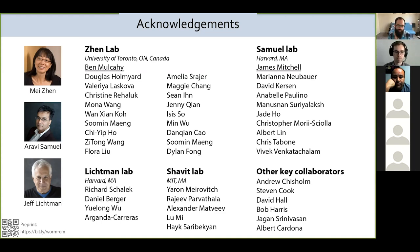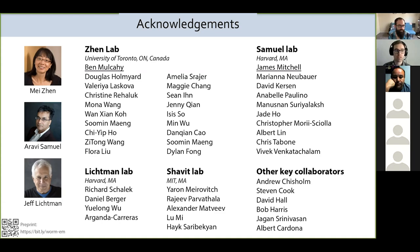Is there any plan to extend EM annotation outside the nerve ring? Yes, there are many plans. In the short term, we have collected an entire L1 animal covering the full animal and are working on getting that out — not just the nervous system but also muscle, glia, and maybe other cells. In the long term, we're working on scaling this up to do entire animals in many conditions, enabling what we call experimental connectomics.